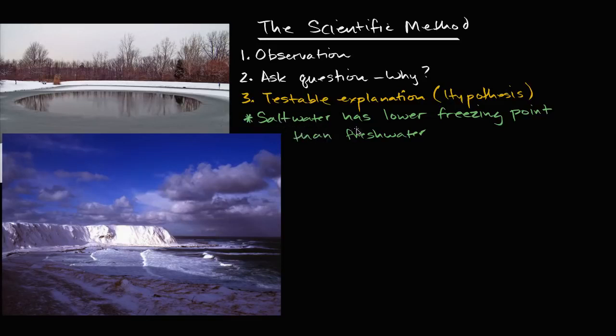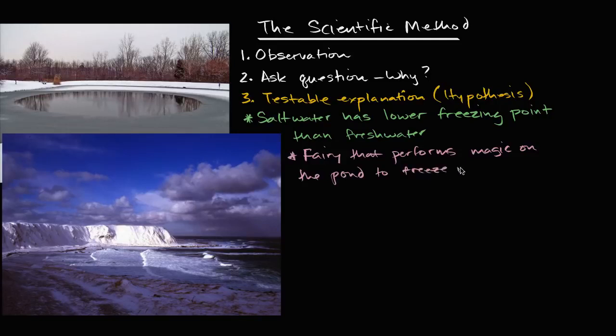Now, what would be an example of a bad hypothesis, or something that you couldn't even necessarily consider as part of the scientific method? You could say that there is a fairy that performs magic on the pond to freeze it faster. And the reason why this isn't so good is that this is not so testable. You don't know how to convince the fairy to do it again. You haven't seen the fairy, you haven't observed the fairy, it's not based on any observation, and so this one right over here, this would not be a good hypothesis for the scientific method.